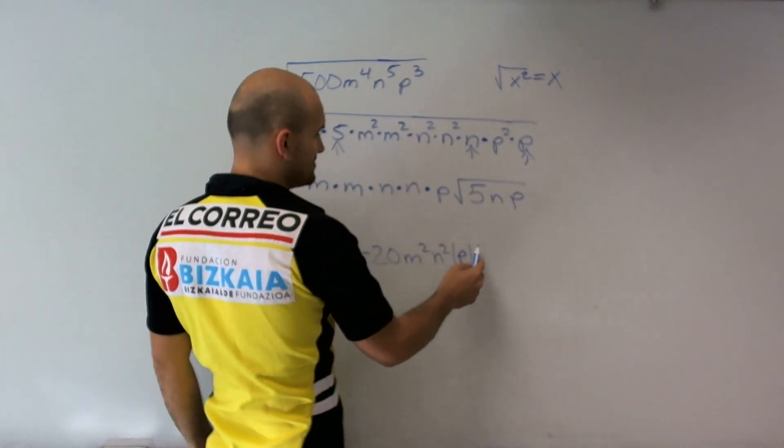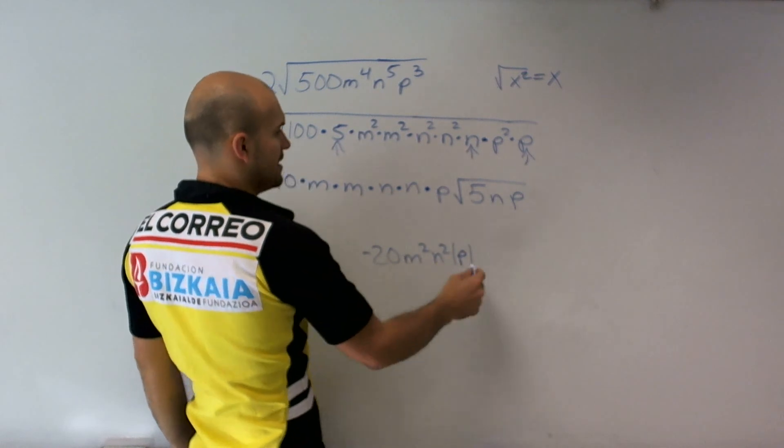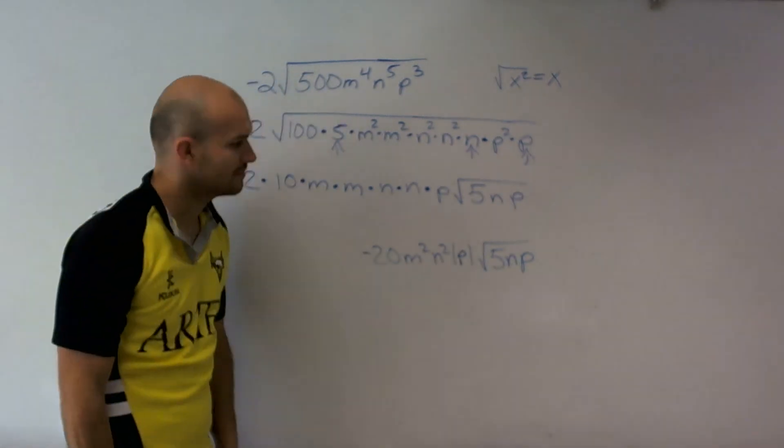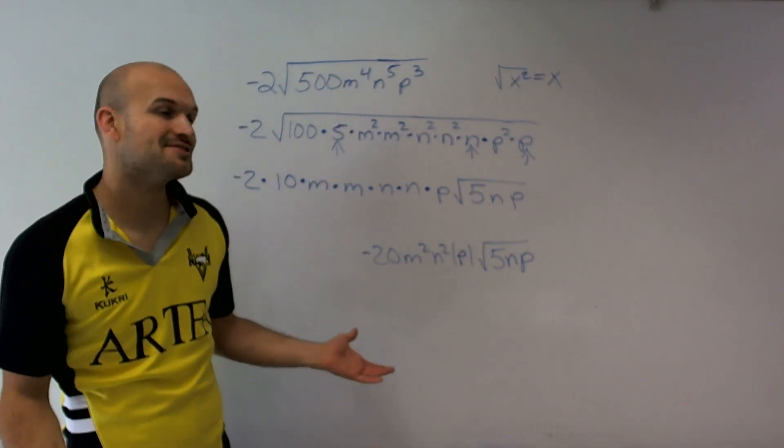So we have n squared times our absolute value of p and then times what's left in our radical, which is 5np. And there you go, that is your final solution.